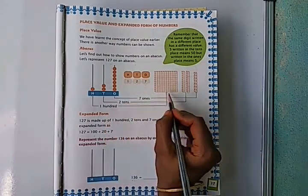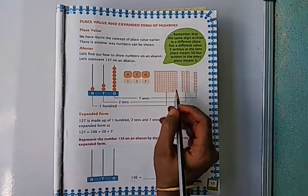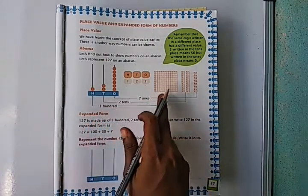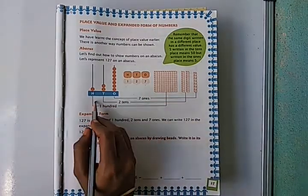In hundreds, one hundreds block. So by using blocks we can represent this number like this. Next, this is abacus.